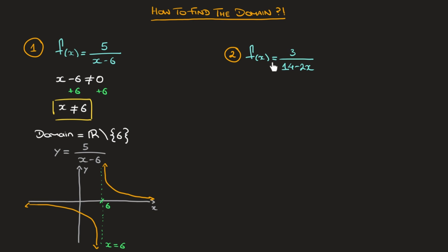We have f of x which equals 3 over 14 minus 2x. Well again, to make sure that this function is properly defined, we need to make sure that the denominator doesn't equal 0. In other words, we need to make sure that 14 minus 2x doesn't equal 0.